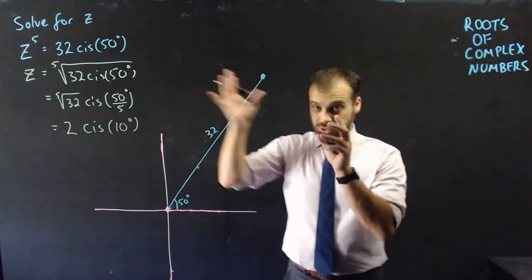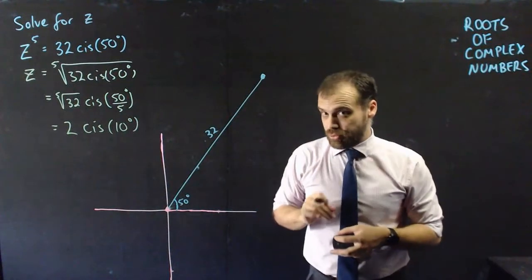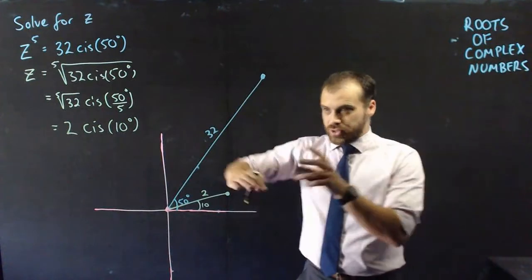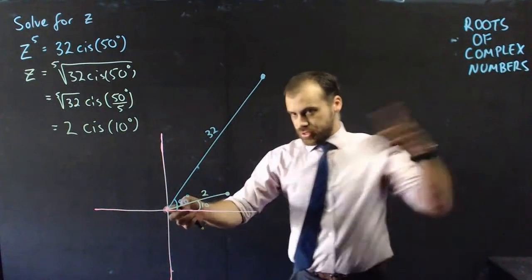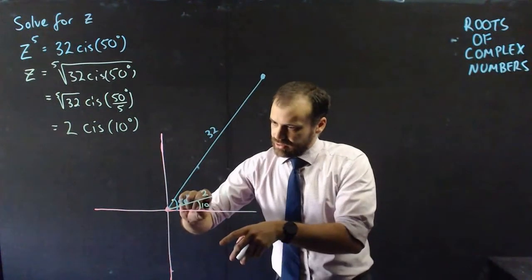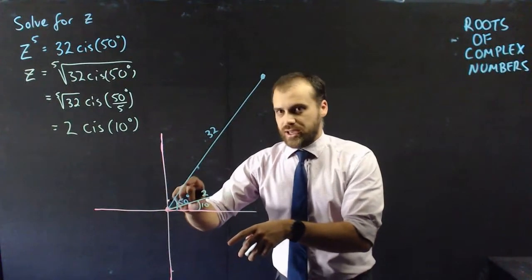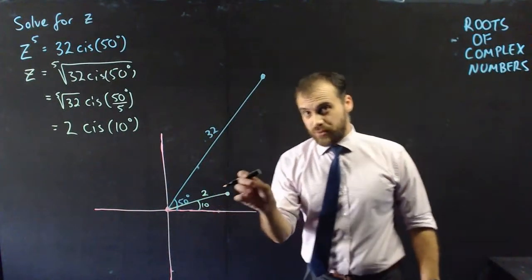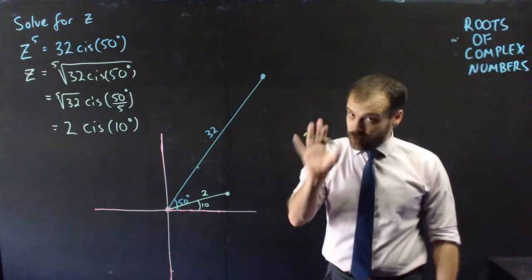Forget that for a second because the geometric interpretation is far more important. A length of 2 with an angle of 10 degrees. You can see how these are related. This is to the power of that, and this angle here is one fifth of that angle there. But there are a lot more answers than just that one, not just one more answer, but quite a few more.